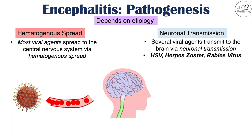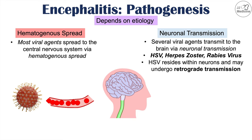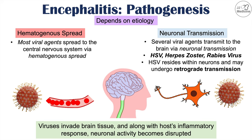Viruses like HSV reside within neurons and may undergo retrograde transmission. For example, if HSV is located in a neuron inside someone's lip, it may undergo retrograde transmission back through the neuron into the brain to infect it. In both pathogenic mechanisms, viruses invade brain tissue, triggering a host inflammatory response, which leads to disrupted neuronal activity — all of which contribute to the signs, symptoms, and complications of encephalitis.